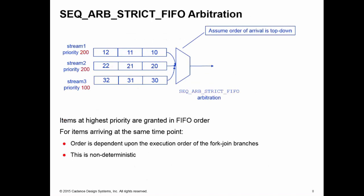Here, items being sent to the sequencer are maintained in FIFO order, and we look at the priority of the items. Items at the highest priority are granted in FIFO order. We assume the order of arrival is top-down. Although for items generated at the same time point, their order being supplied to the sequencer can depend on the execution order of the branches of your fork join in your sequence. This is non-deterministic but repeatable between simulation runs. I have three streams here: stream 1 and 2 have priority 200, stream 3 has priority 100.